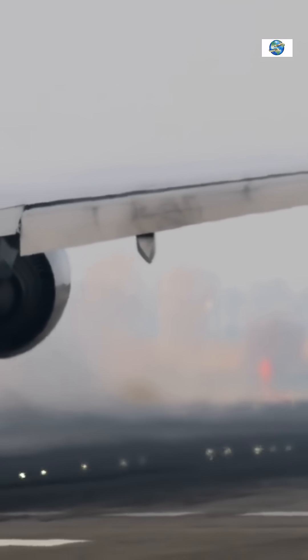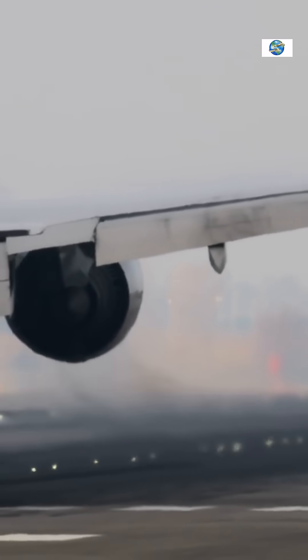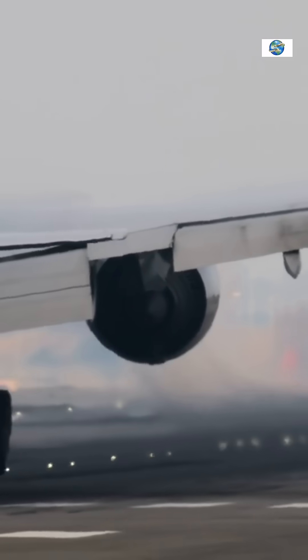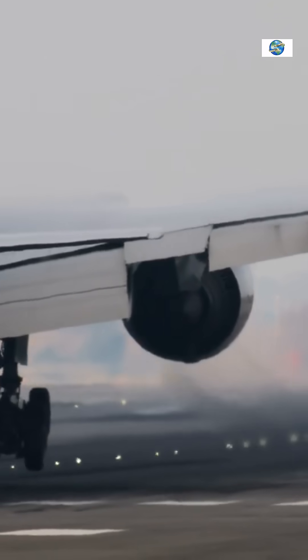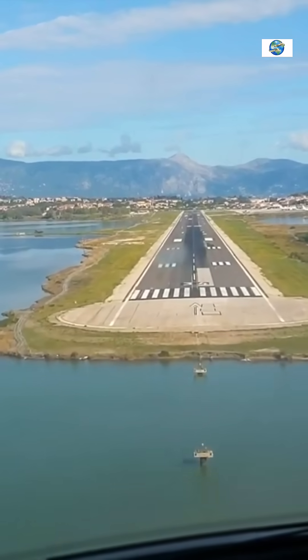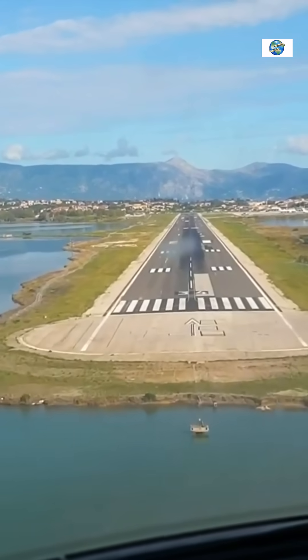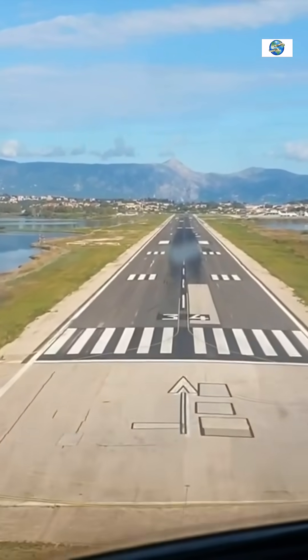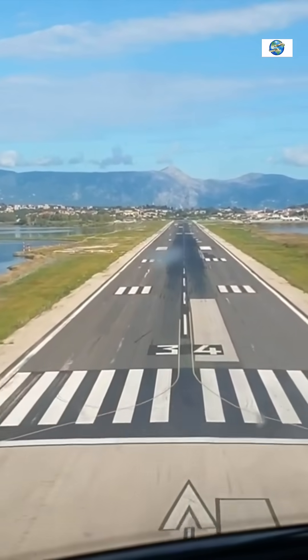Descent control: Spoilers are deployed during descent to create drag, which helps the aircraft descend more steeply without gaining excessive speed. This is especially useful during approaches to airports with restrictive altitude or terrain constraints.